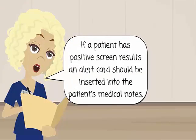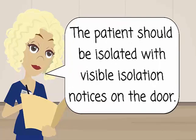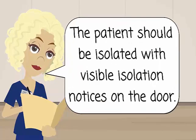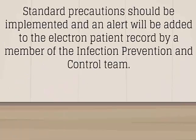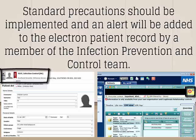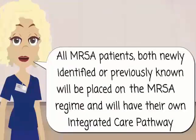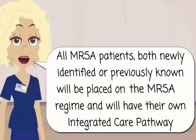If a patient has a positive screen result, an alert will be applied to the patient's medical notes. The patient should be isolated with visible isolation notices on the door. Standard precautions should be implemented and an alert added to the electronic patient record by a member of the infection prevention and control team. All MRSA patients — both newly identified or previously known — will be placed on an MRSA regime with their own integrated care pathway.